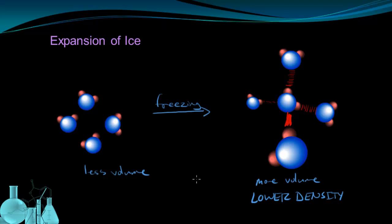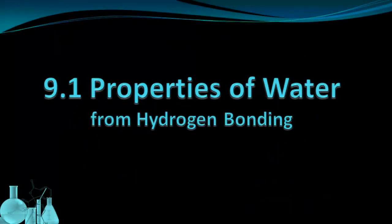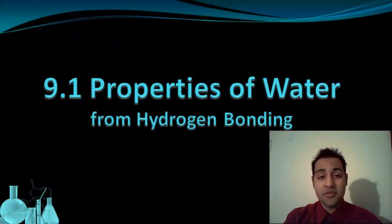And that's why ice is able to float in water, because even though they're the same substance, the ice formation, the ice crystal, has a lower density than liquid water. That wraps up our lesson on the properties of water due to hydrogen bonding. Write down any questions you have in your notes and bring them with you to class.